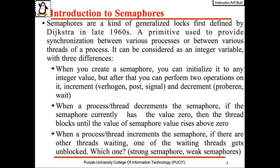When a process or thread decrements the semaphore, if the semaphore currently has the value 0 then the thread blocks until the semaphore value rises above 0. When a process or thread increments the semaphore, if there are other threads waiting, one of the waiting threads gets unblocked. Which one gets unblocked depends on whether it is a strong semaphore or a weak semaphore. In strong semaphores a queue is maintained and the oldest process or thread gets activated, while in weak semaphores a process or thread is selected at random.